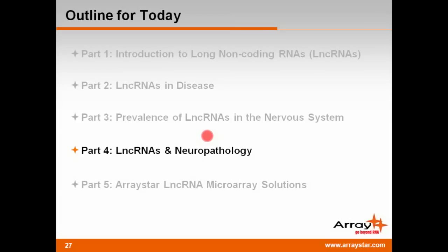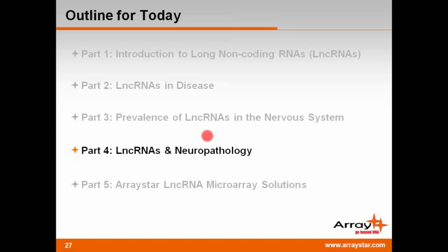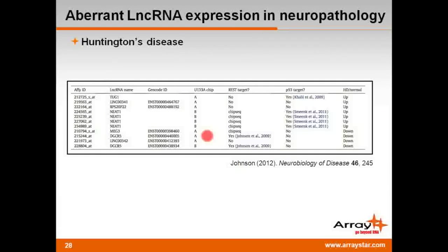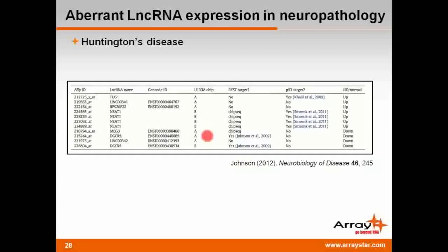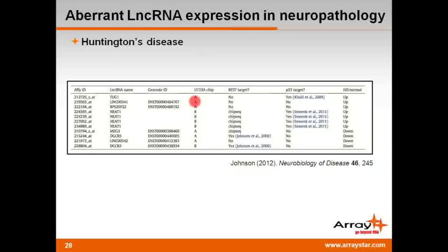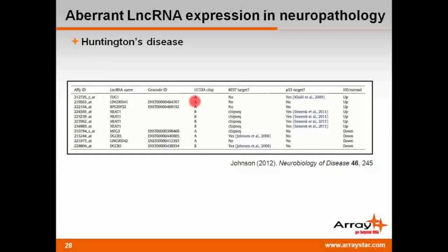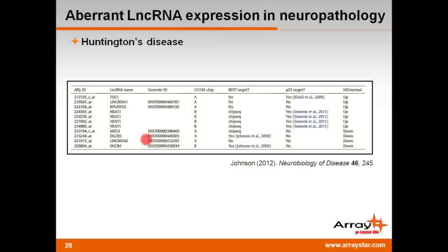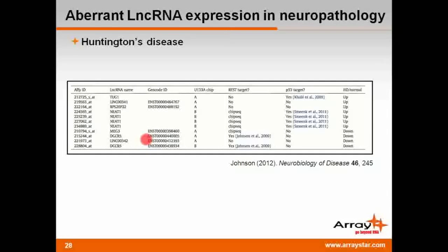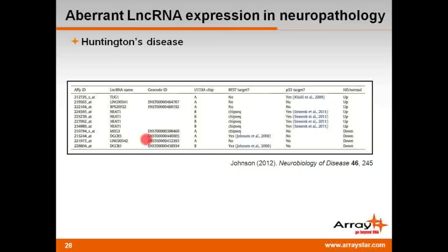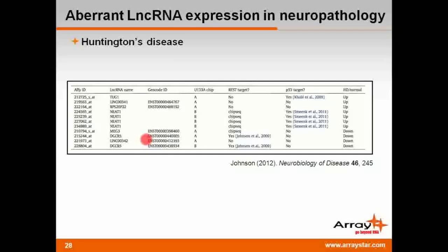I'll now discuss the roles of LNCRNAs in neuropathology. Huntington's disease, also known as HD, is a devastating fatal neurodegenerative disease caused by triplet repeat expansion in a gene encoding the Huntingtin protein. Shown here is a list of LNCRNAs whose expression is altered in HD patients. Rory Johnson found that some of these LNCRNAs are targets for REST, a transcriptional regulator known for its involvement in HD-mediated neurodegeneration.